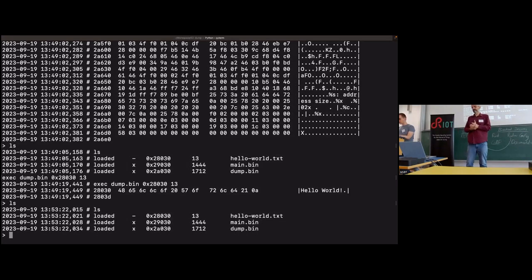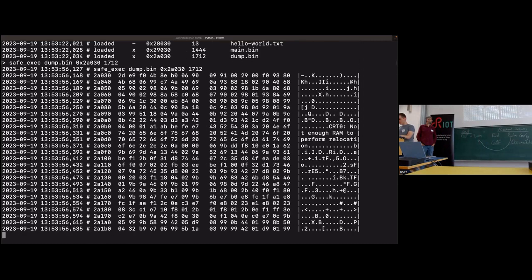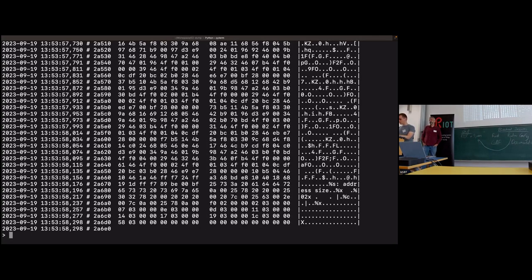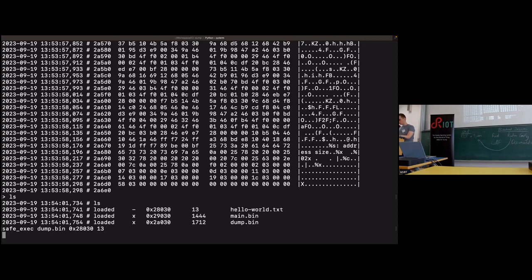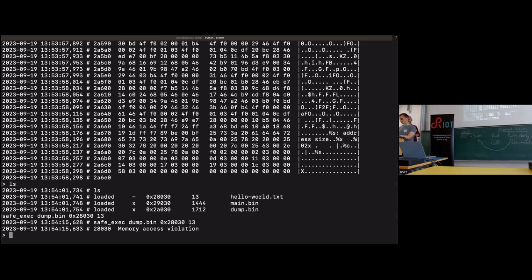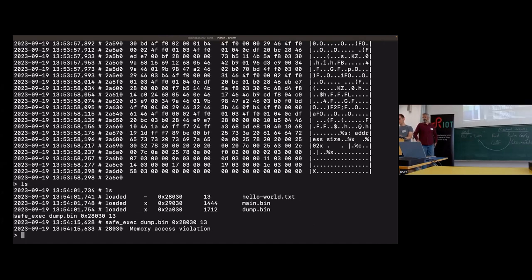Which executes a dynamically loaded binary to an isolated environment. So for example, I can execute the same program as before. So I will write the start address of the binary, of the dump binary. So I'm able to access this. I access my code. But if I try to dump the hello world file, we get a fault, and then we kill the thread. Thank you.